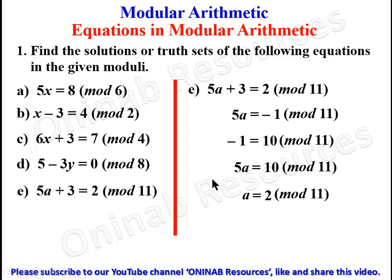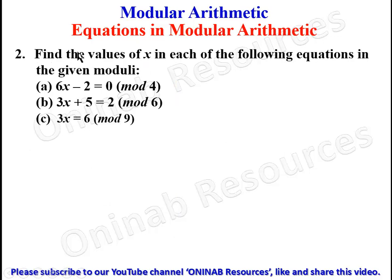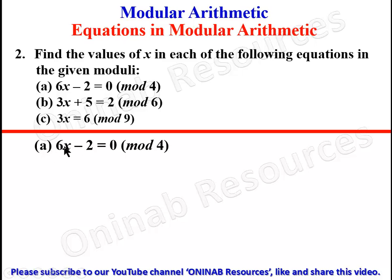That is the solution of problem 1e and all of problem 1. We go to problem 2: find the values of x in each of the following equations in the given moduli. Here we are not just finding one value of x — there are many values of x that will satisfy each equation. For part (a), collecting terms gives 6x ≡ 2 (mod 4).